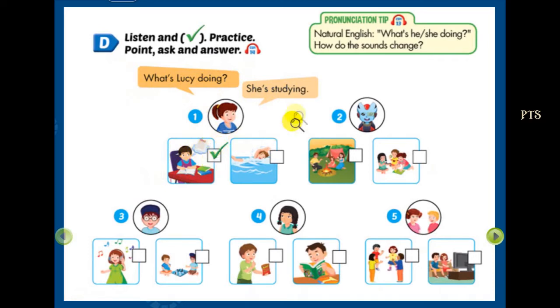Two: What's Alfie doing? He's playing with friends. Three: What's Charlie doing? He's playing chess.